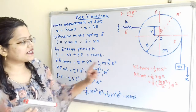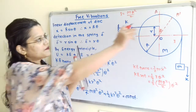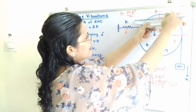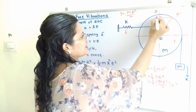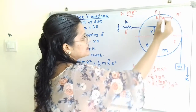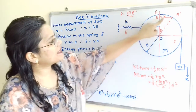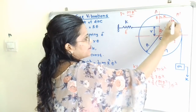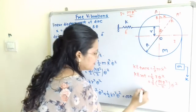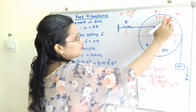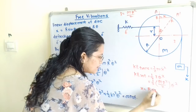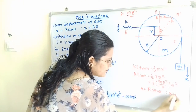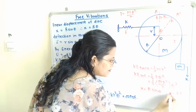Now we find the relation between x and theta. From point A dash we draw a perpendicular line to line O-A, with point of intersection B. Then B to A dash equals x. From triangle OBA dash, x = R·sinθ, where O to A dash is capital R. Since theta is very small, sinθ ≈ θ, therefore x = R·θ. This is the relation between x and theta.